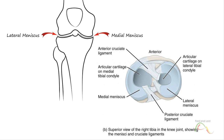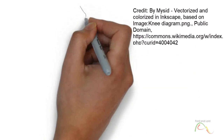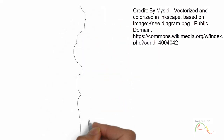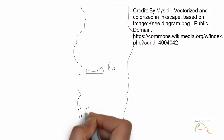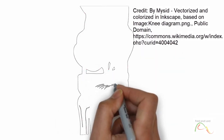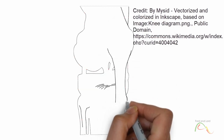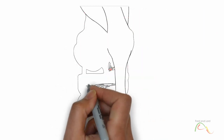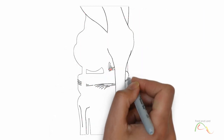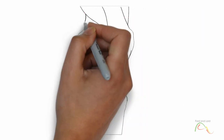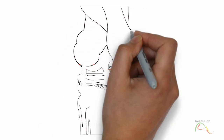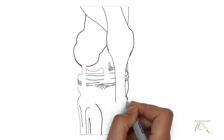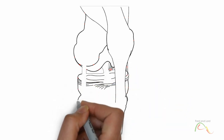The menisci provide padding between the bones and work as cushions to help fill the gap between the round femoral condyles and the flattened tibial condyles. Some areas of each meniscus lack an arterial blood supply, and thus these areas heal poorly if damaged.